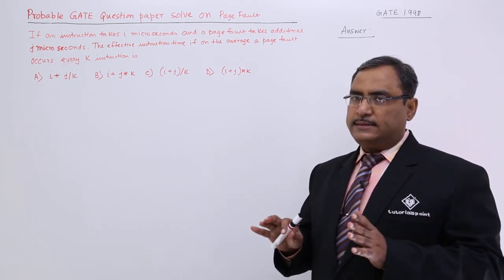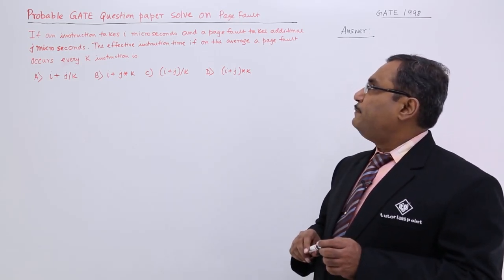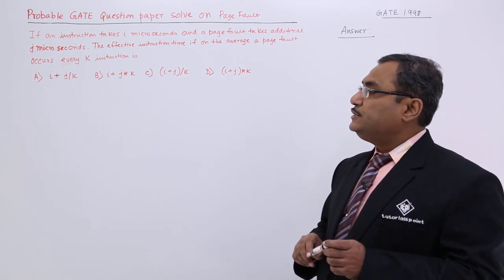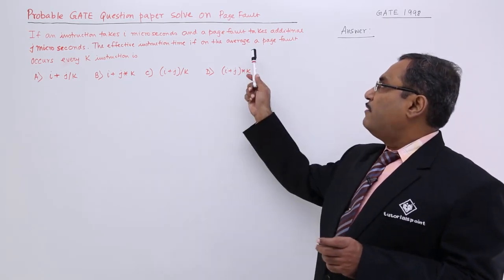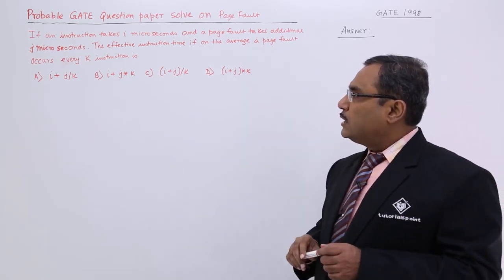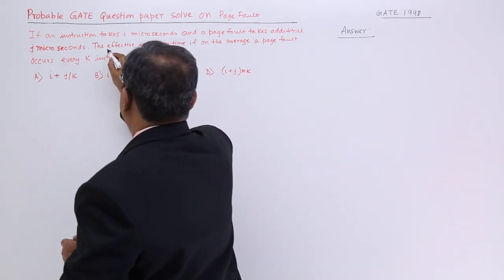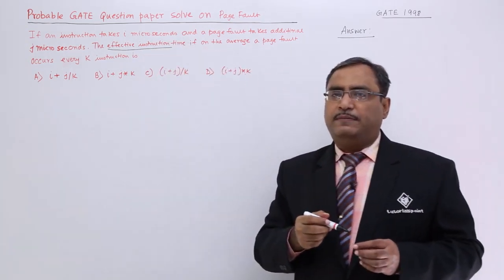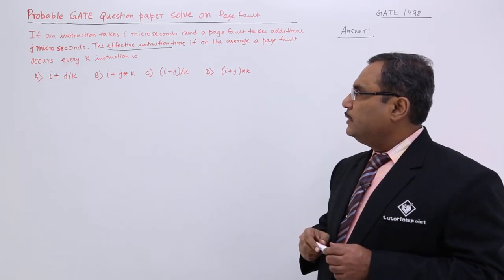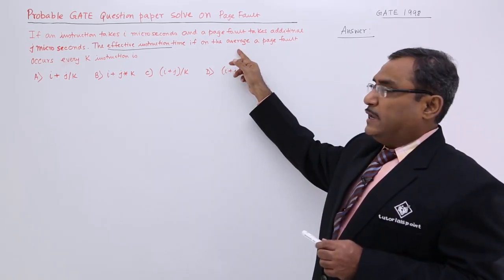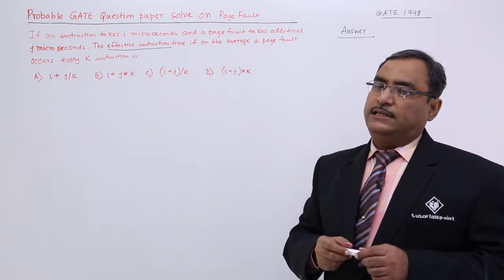If there is no page fault and you are accessing only the memory, then it takes i microseconds. And if a page fault has occurred, then it takes j microseconds. You are supposed to calculate the effective instruction time, also known as effective accessing time, given that on average a page fault occurs every k instructions.